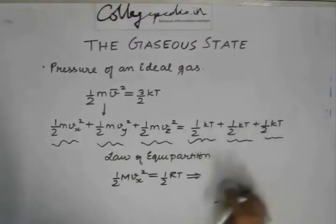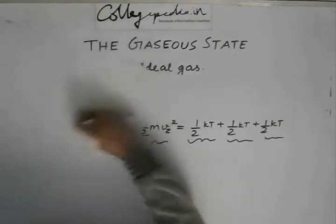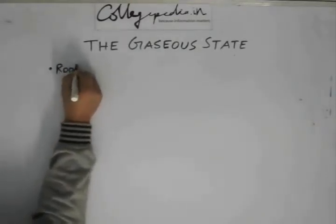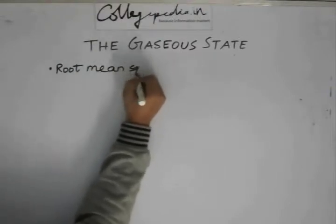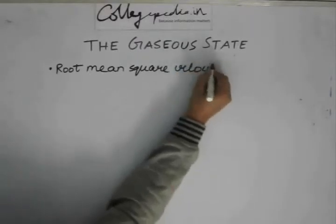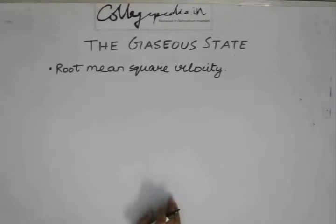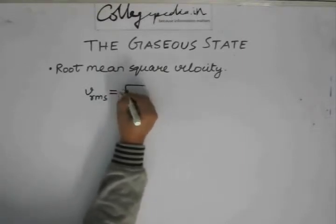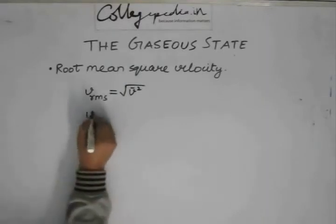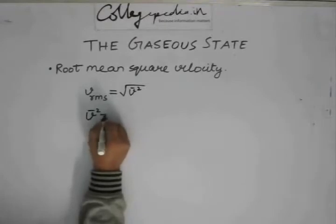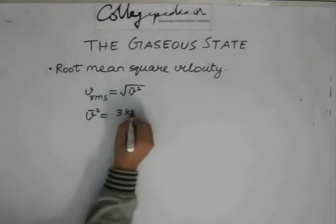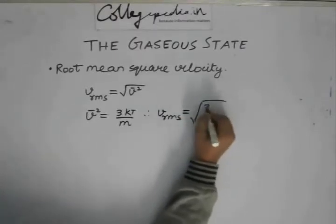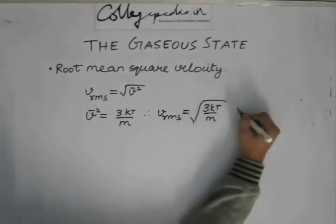From this, let us find a very widely used quantity known as the root mean square velocity. Vrms is nothing but the under root of the square mean velocity which is V square. So, V square from the expression we found out was nothing but 3 KT by M. Therefore, Vrms is going to be square root of 3 KT by M. This is one expression for Vrms.